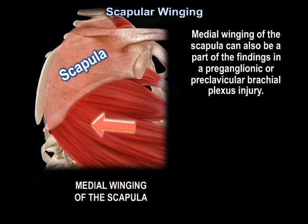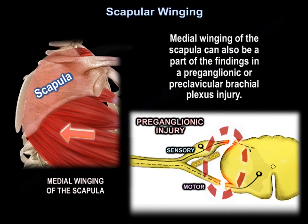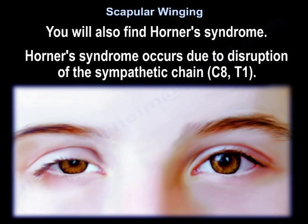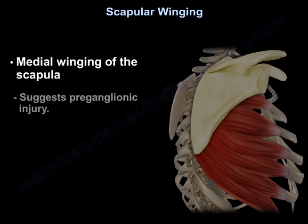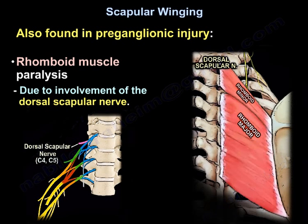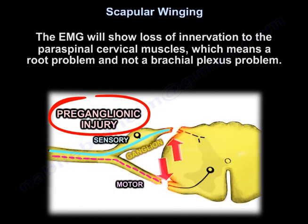Medial winging of the scapula can also be part of the findings in a preganglionic or preclavicular brachial plexus injury. You will also find Horner's syndrome, which occurs due to disruption of the sympathetic chain at C8-T1. Medial winging of the scapula suggests preganglionic injury. Additionally, rhomboid muscle paralysis occurs due to involvement of the dorsal scapular nerve, and supraspinatus and infraspinatus weakness occurs due to suprascapular nerve involvement.